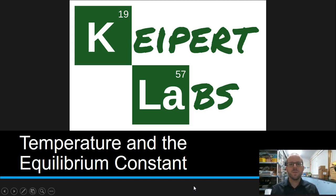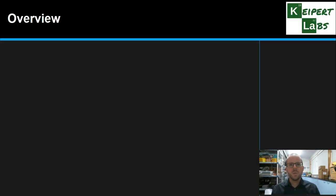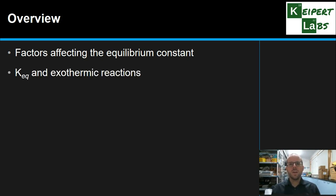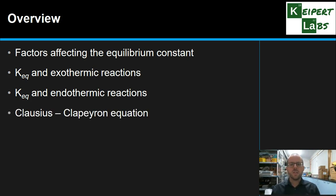Hi everyone, welcome to this episode of Kuypert Labs. In today's video we're going to talk about temperature and the equilibrium constant. We're going to start off by remembering the factors that affect the equilibrium constant, KEQ. We're then going to look at the relationship between what happens to K in exothermic and endothermic reactions. And then we're going to introduce something called the Clausius-Clapeyron equation as a way for us to be able to mathematically look at what happens to K at different temperatures.